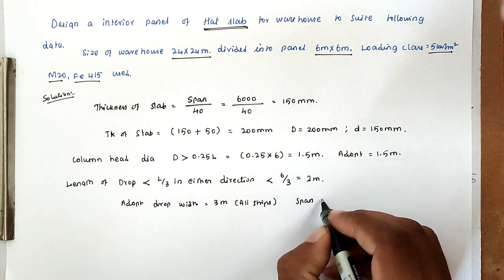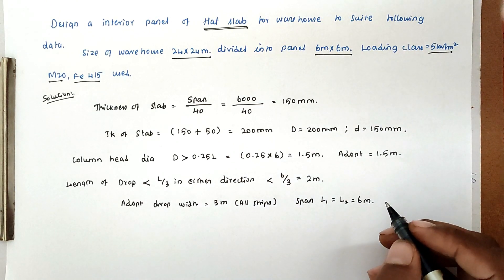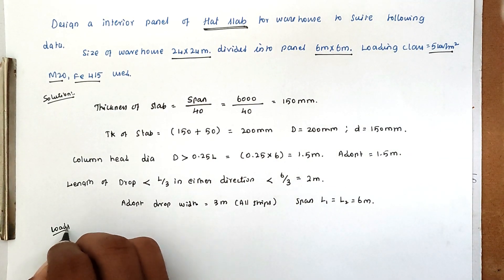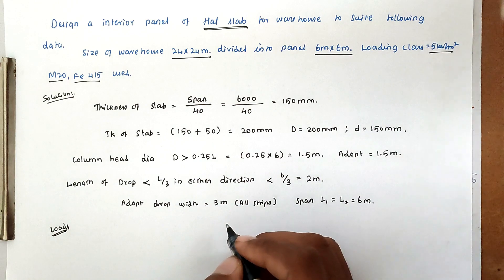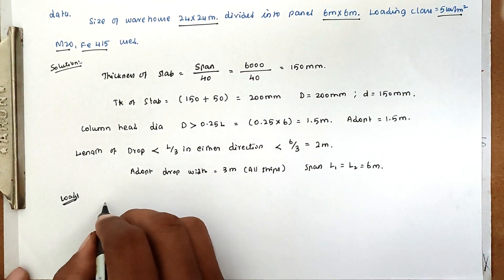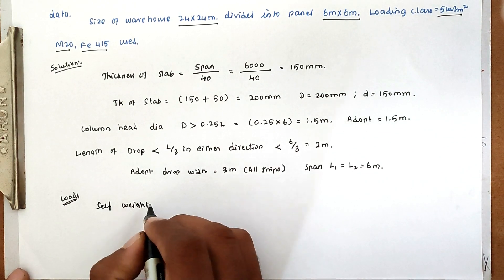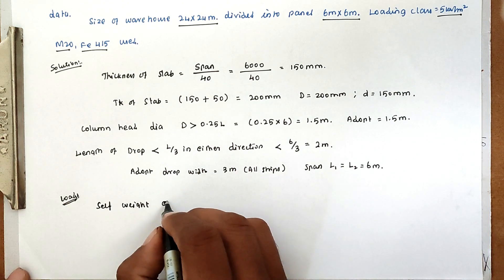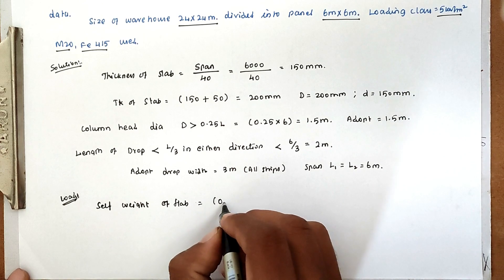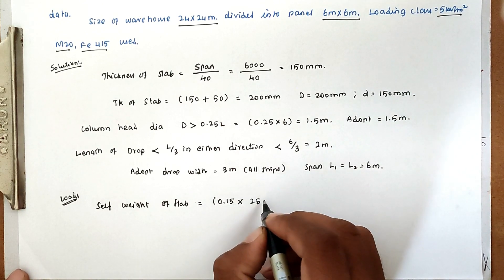Span L1 and L2 equal 6 meters as given. Now we can calculate the loads. First, we find the self weight of slab.